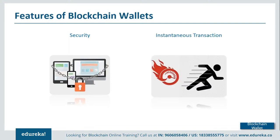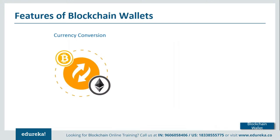The next feature is instantaneous transactions. Unlike bank transactions where you may have to wait for banking hours, blockchain transactions can be initiated 24 hours a day, seven days a week, with no delay. Another major feature is the ability to convert your bitcoins into different cryptocurrencies or sell them for any currency you want. In today's demo I'll show how to buy bitcoins and how to convert bitcoins to Ethereum on the blockchain.info wallet.